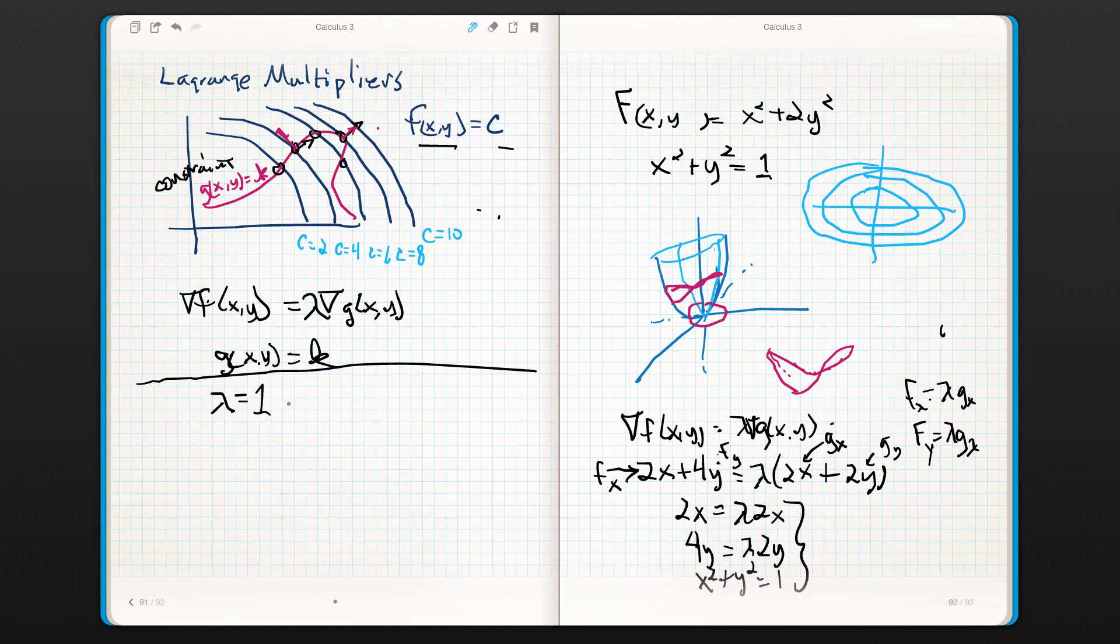Now, if lambda equals 1, doesn't this imply that 4y is equal to 2y? Wait, what? If 4y equals 2y, then y equals 2y, which cannot happen unless, what? Well, y's got to equal 0. Now, remember though, we've got this lovely little constraint right here.